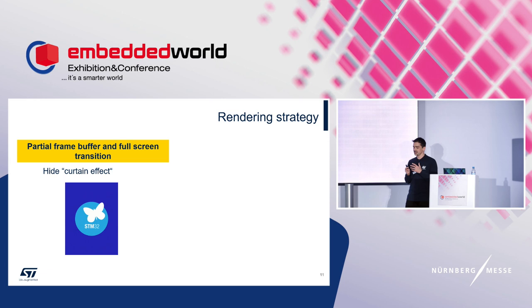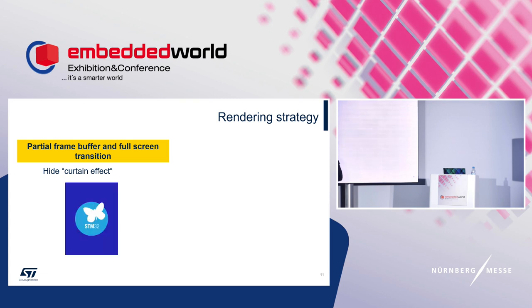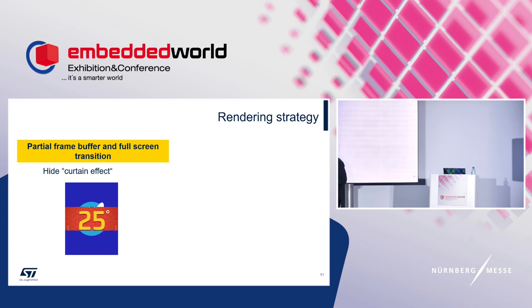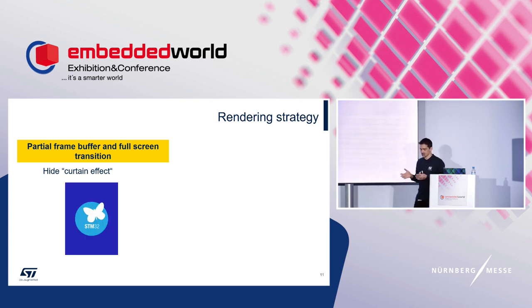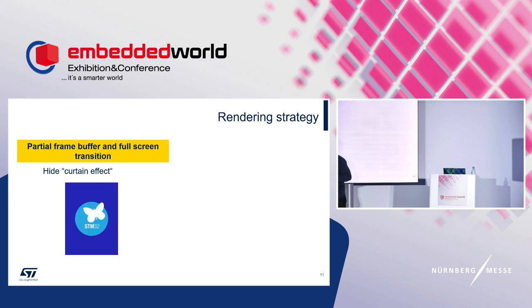This partial frame buffer allows sequential updates of the display, which is very important for full-screen transitions on entry-level MCUs because it hides the curtain effect. By updating sequentially — starting from the middle of the screen, drawing one or two lines at a time — the transition appears intentional rather than a hardware limitation. You can customize this: update left to right, block by block, or any pattern. The idea is always a sequential update of the internal GRAM buffer.